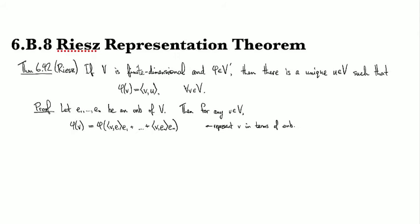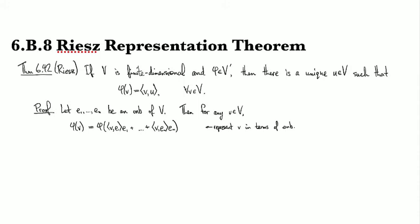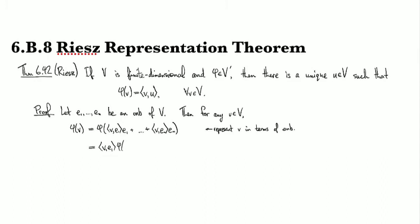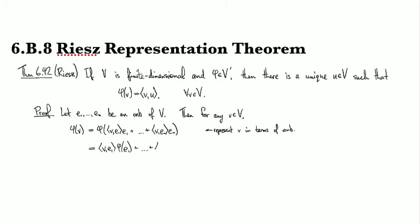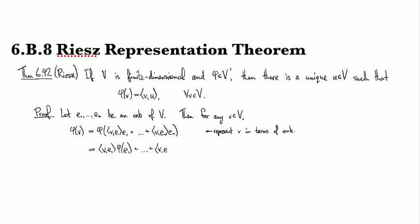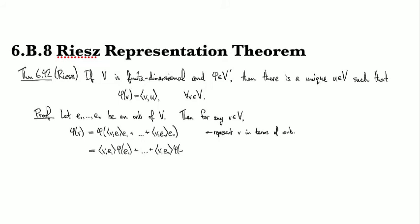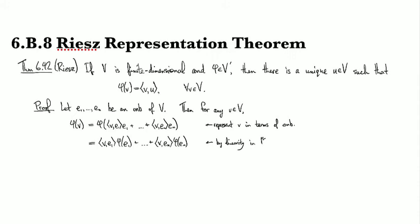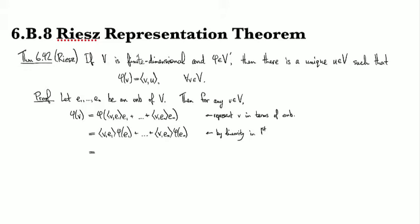And now I can use linearity because Φ is an element of the dual space so it's a linear functional. So I can break up this sum and in each case I can pull out the coefficient, pull out the coefficient of v e1 out of Φ where it's applied to e1, and so on and so forth. Should I do this in a couple steps? I think it's clear. And so this is by linearity in the first slot.